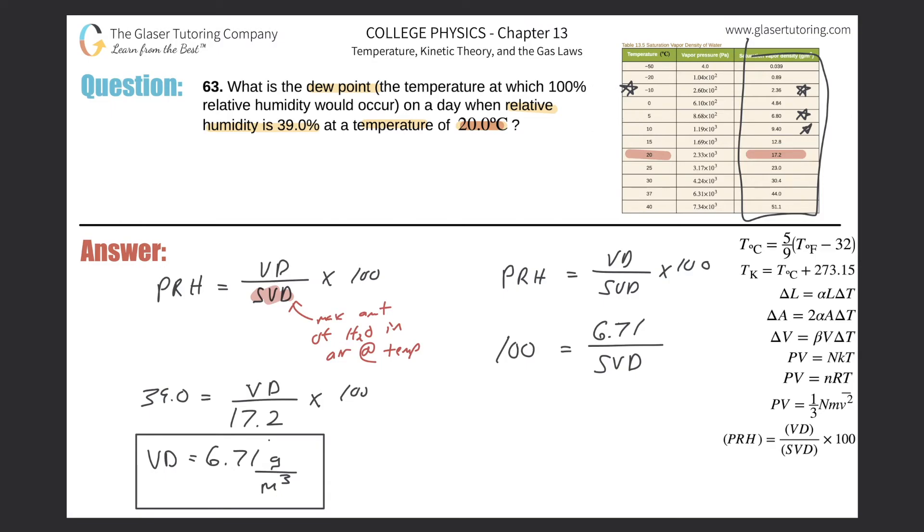Let's calculate. Don't forget to multiply this by 100. Notice mathematically the hundreds will cancel, so essentially the saturation vapor density, I mean this would work out to be one, is equal to 6.71 over SVD.